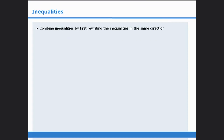Let's summarize. In this lesson, we learned that we can combine some inequalities if we first rewrite them so that the inequality signs are facing the same direction. We also saw that we can add inequalities once the inequality signs are facing in the same direction.